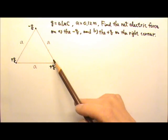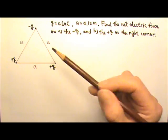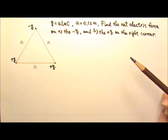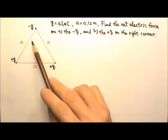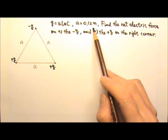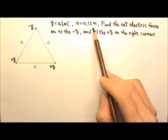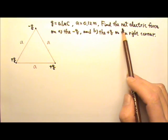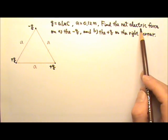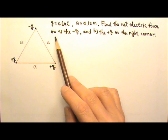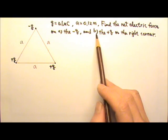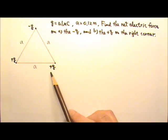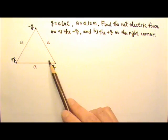Three point charges are at the corners of an equilateral triangle. If Q is 0.1 microcoulombs and each side of the triangle is 0.12 meters, find the magnitude and direction of the net electric force on A, the negative Q, and B, the positive Q on the right corner.